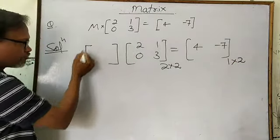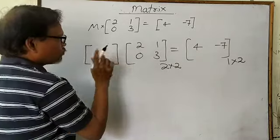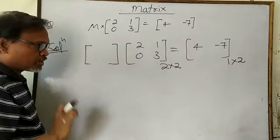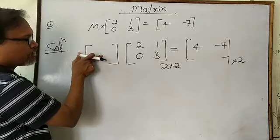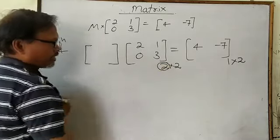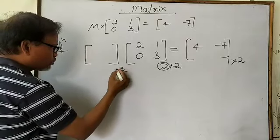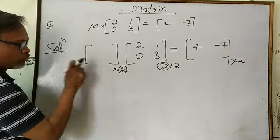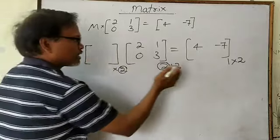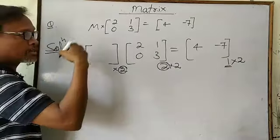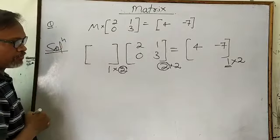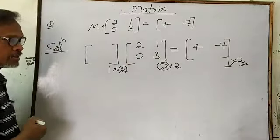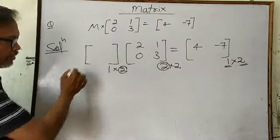Now, how to find the order of matrix M? If you know the rules of multiplication, two matrices can be multiplied if and only if the columns of the first matrix equal the rows of the second matrix. So if the second matrix has 2 rows, the first matrix must have 2 columns. The row of the first matrix equals the row of the resultant matrix, which is 1. And the column of the second matrix equals the column of the resultant matrix.